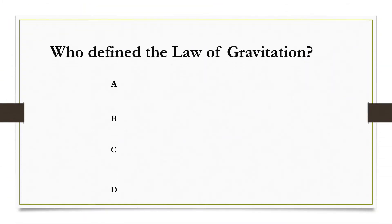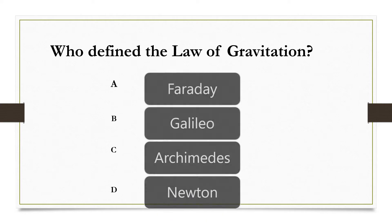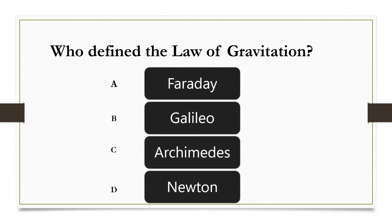Who defined the law of gravitation? There are four options. A. Faraday. B. Galileo. C. Archimedes. D. Newton.